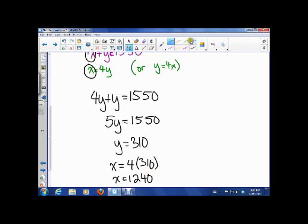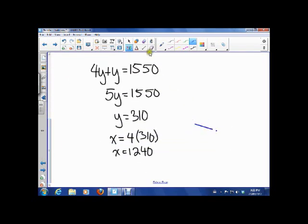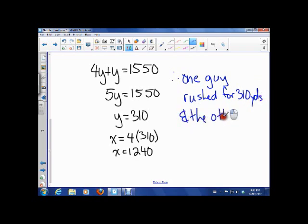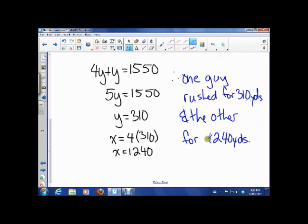So now what we have to do is make a statement that's in terms of our problem. We've got to put it back to context. So the question was how much did each of them rush for, and our answer is going to be: one guy rushed for 310 yards and the other for 1240 yards. So that's that. We've answered the question. The question is how many yards were rushed by each one? We said one guy rushed 310, the other one 1240, so we're done.